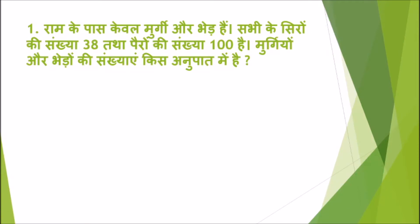So the first question is: Ram के पास केवल मुर्गी और भेड़ हैं। सभी के सिरों की संख्या 38 तथा पैरों की संख्या 100 है। मुर्गियों और भेड़ों की संख्याएं किस अनुपात में हैं? यहाँ प्रश्न बिल्कुल सीधा है — राम के पास मुर्गियाँ और भेड़ें हैं। सभी के सिरों की संख्या 38 है। जैसा कि सभी जानते हैं, हर एक जानवर का एक ही सिर होता है, यानि जितने सिर होंगे उतने ही जानवर होंगे।